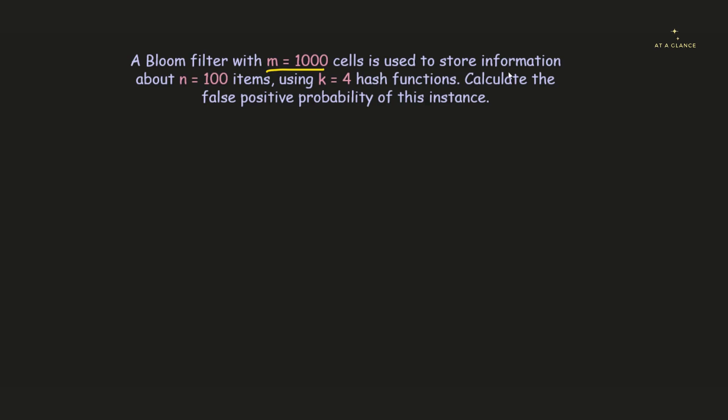is used to store information about n = 100 items using k = 4 hash functions. We need to calculate the false positive probability of this particular instance.